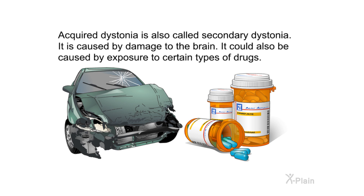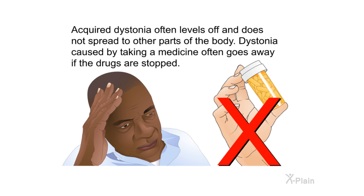Acquired dystonia, also called secondary dystonia, is caused by damage to the brain or by exposure to certain types of drugs. It often levels off and does not spread to other parts of the body. Dystonia caused by taking a medicine often goes away if the drug is stopped.